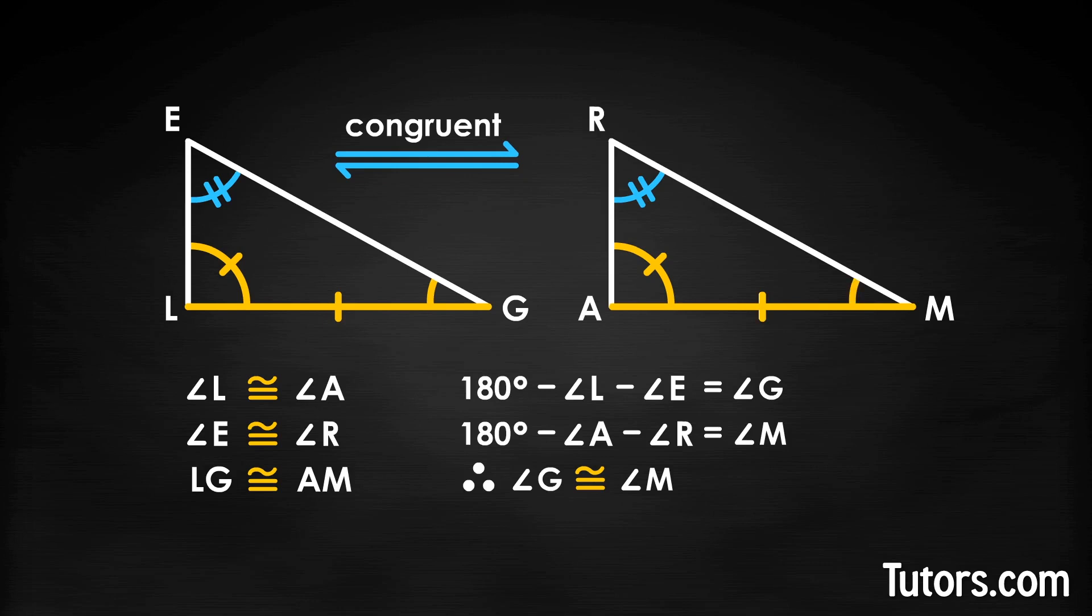In reality, we have no need of proving the third angle's congruence and then deploying ASA, since we have, ready and waiting, the AAS theorem. So real mathematicians and geometricians just leap right to AAS and declare the two triangles congruent.